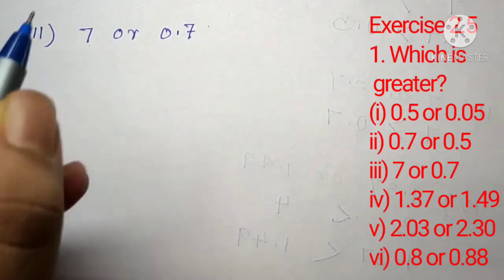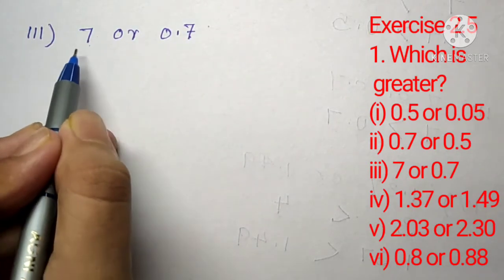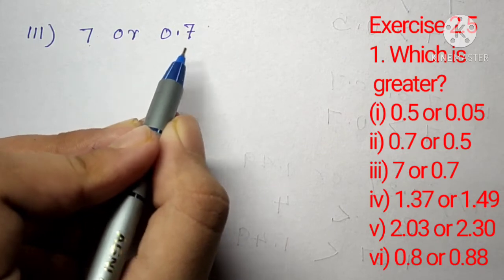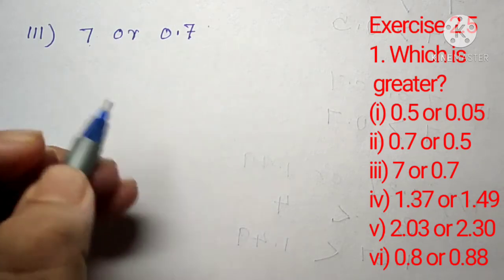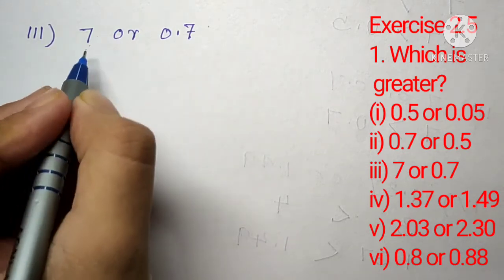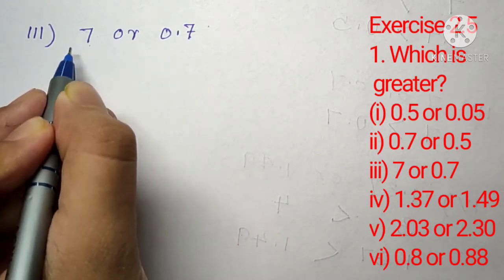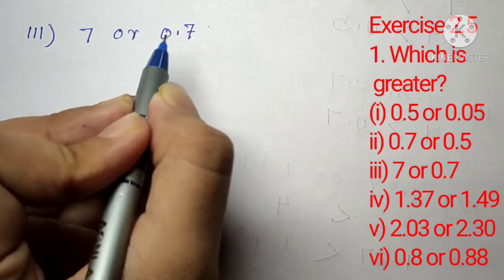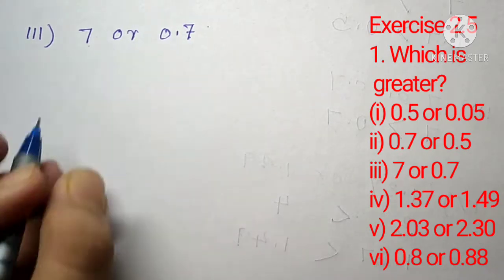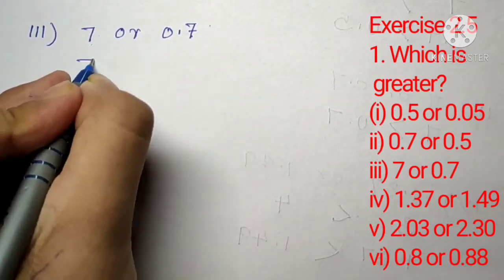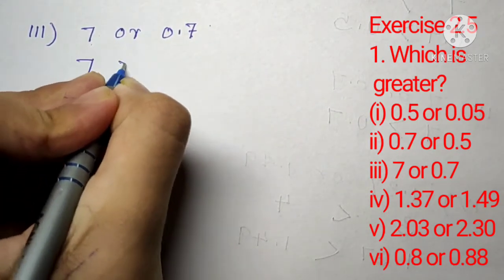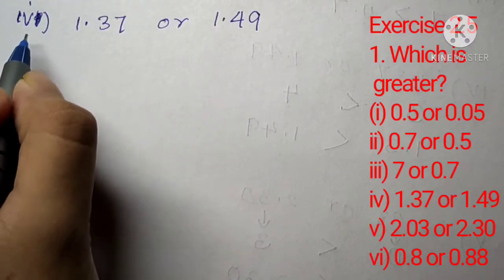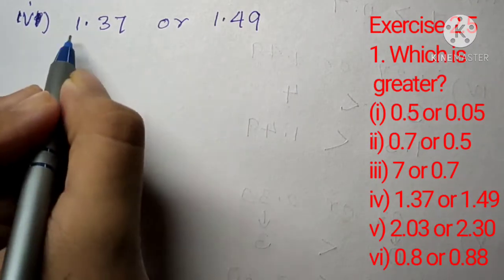Question number 1, part 3: which is greater, 7 or 0.7? A whole number is always greater than a decimal number. Here 7 is a whole number and 0.7 is a decimal number, so we can say that 7 is greater than 0.7.